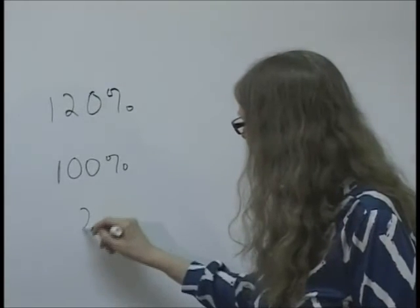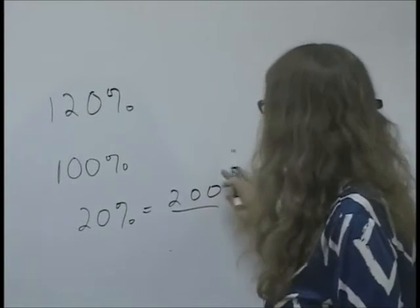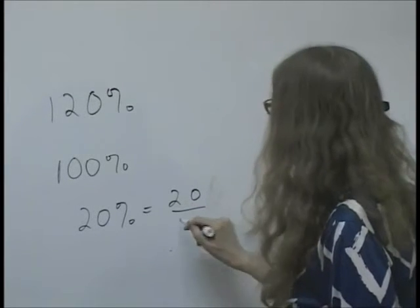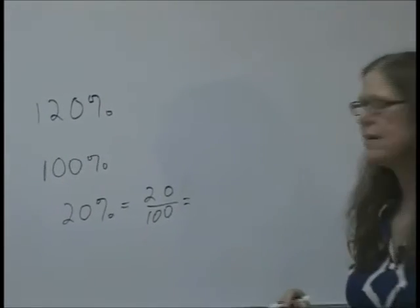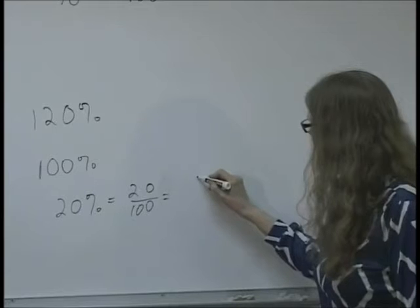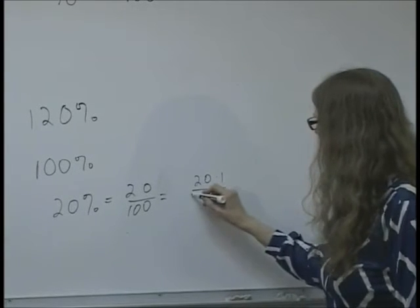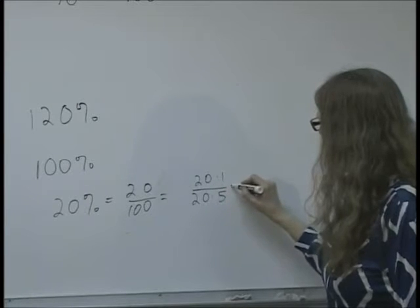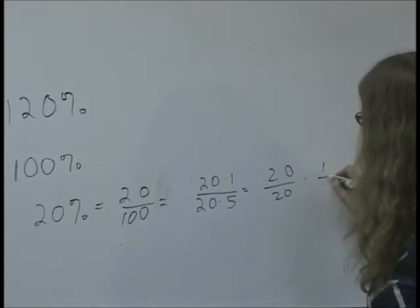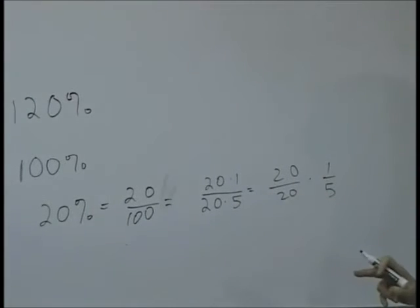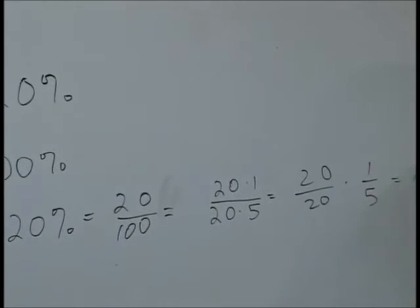And 20 percent is 20 over 100, and how could I simplify that? Well, this is equal to 20 times 1 over 20 times 5. So I could have written it like this: 20 over 20 times 1 over 5, and anything divided by itself is 1. So this is 1 times a fifth, which is a fifth.